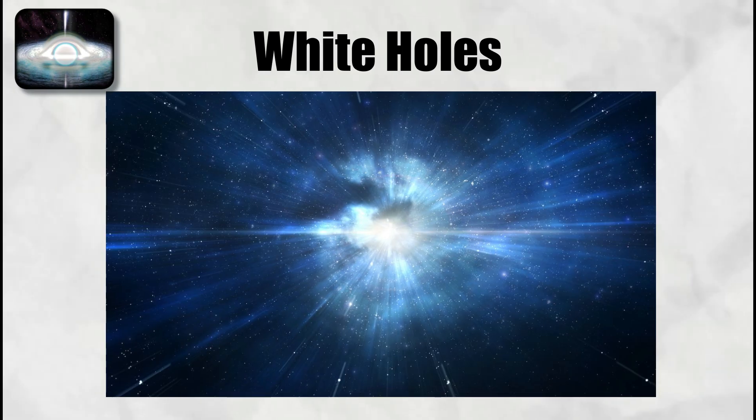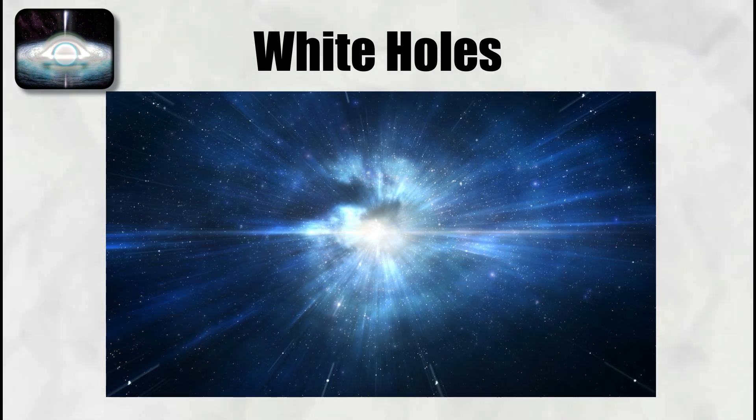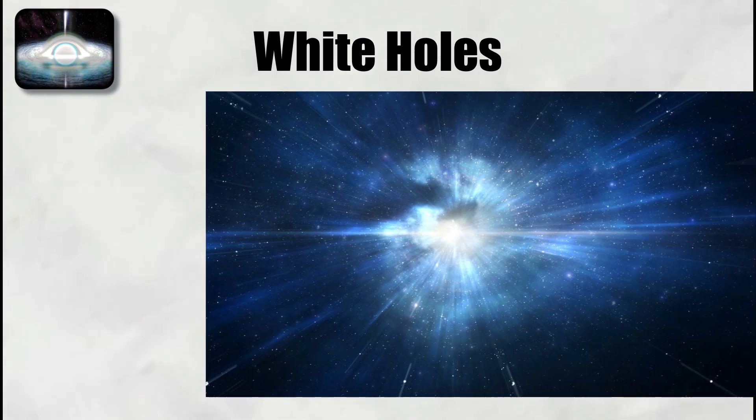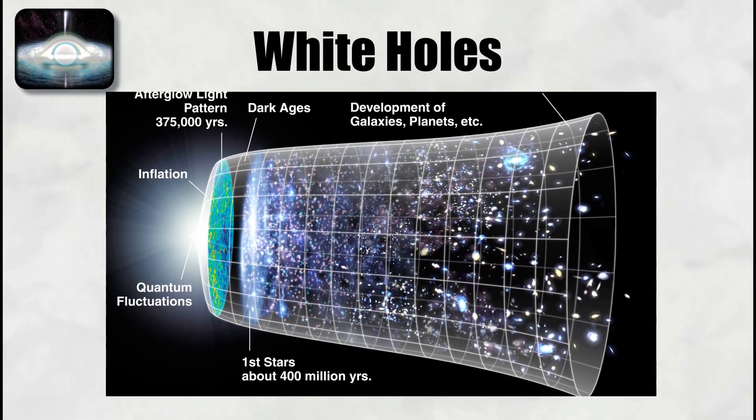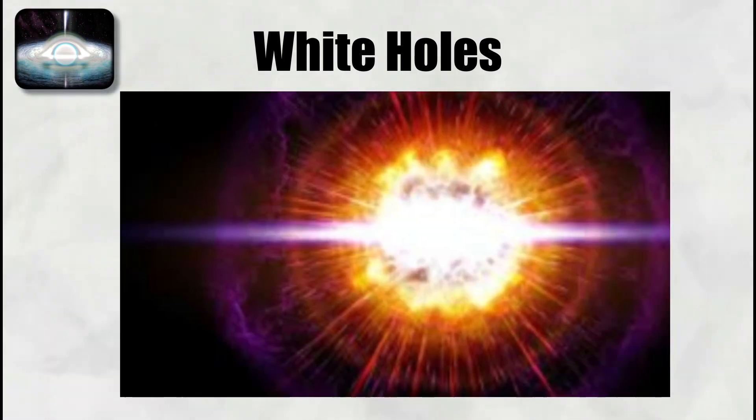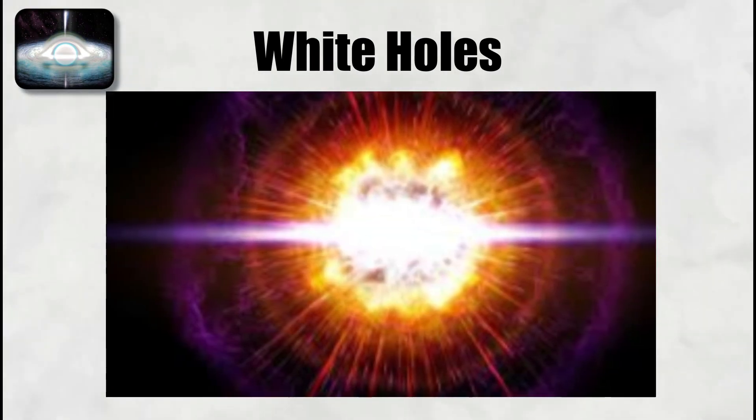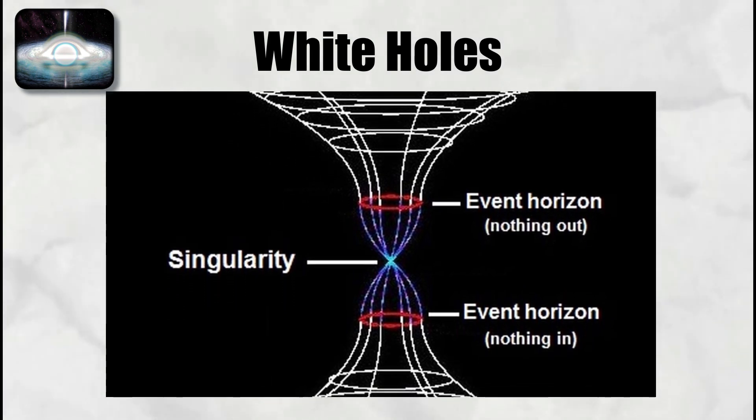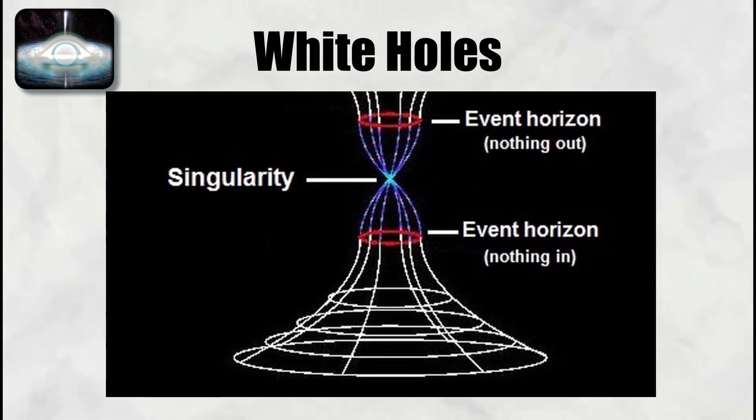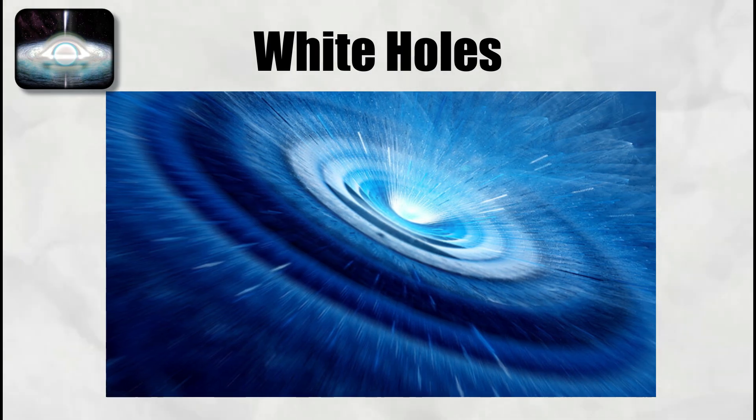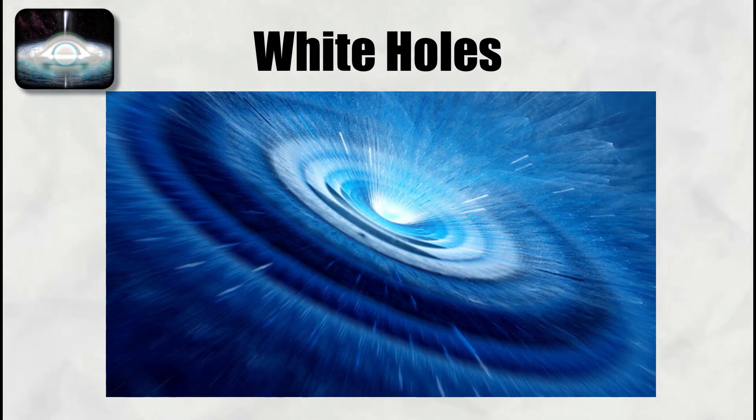The notion that the Big Bang was a white hole captures the idea of a past boundary that emits everything, but it is not precise. The Big Bang describes the origin of spacetime itself in a homogeneous and isotropic solution, not an explosion within a pre-existing ambient space. A white hole is localized with an exterior region it emits into, whereas the early universe had no such outside. Any formal identification requires additional assumptions that change the standard cosmological model.